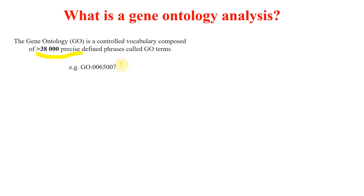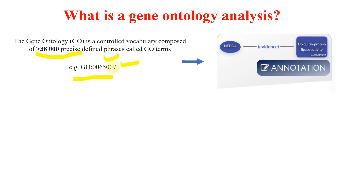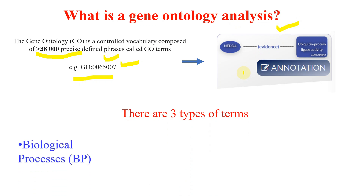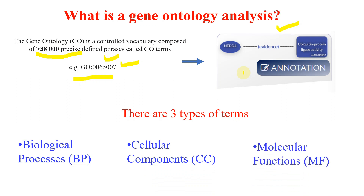You have often seen many types of gene ontology terms. Each GO term has a unique ID that can be searched in the database, and that database annotates the GO terms into specific gene functions according to the evidence from experiments. There are actually three types of terms: one is biological processes, second is cellular components, and third is molecular functions.